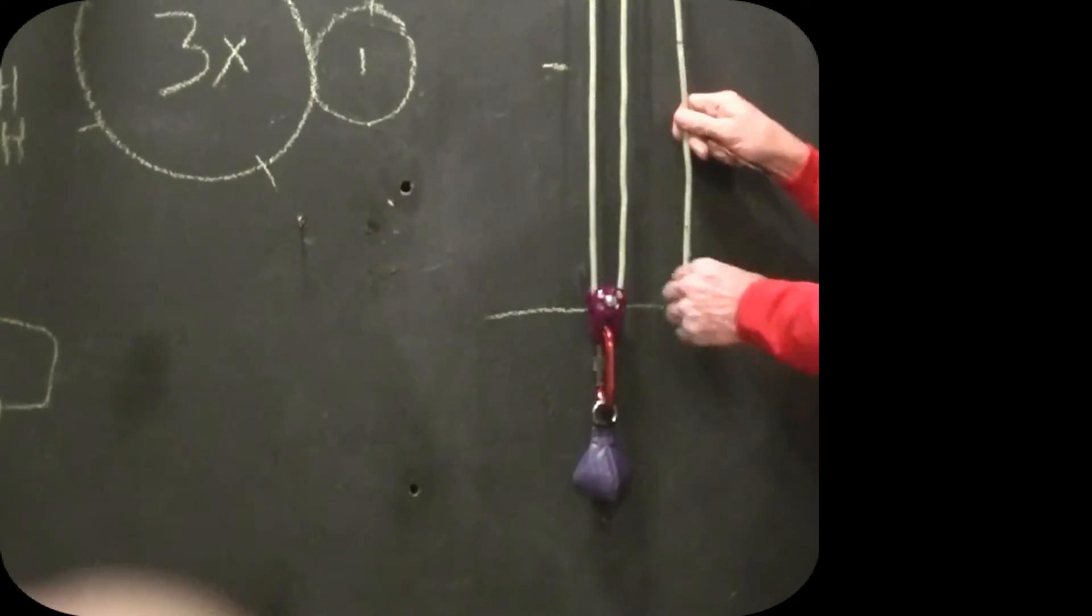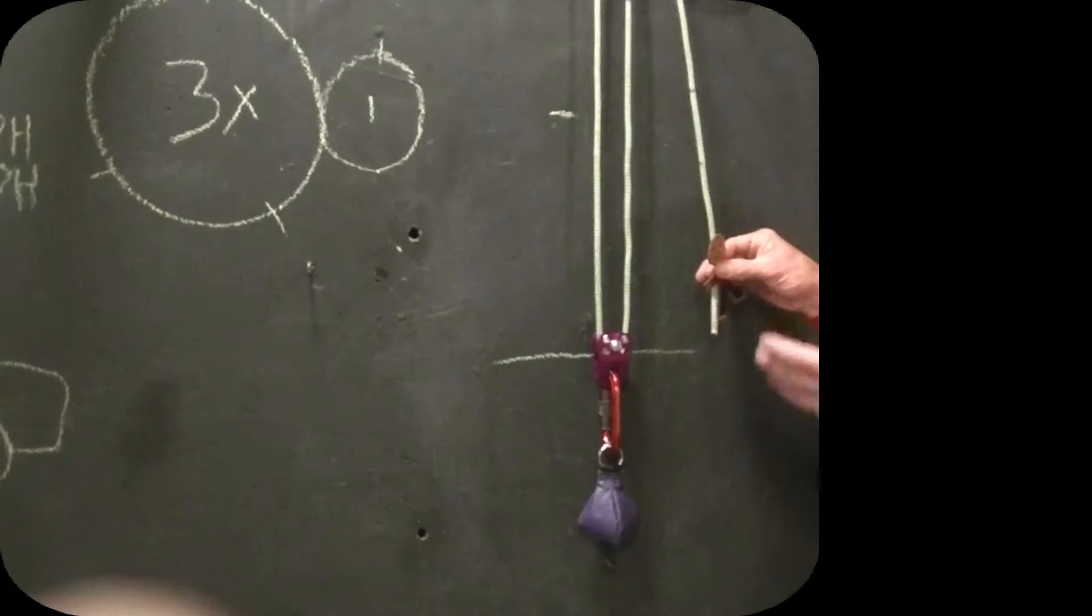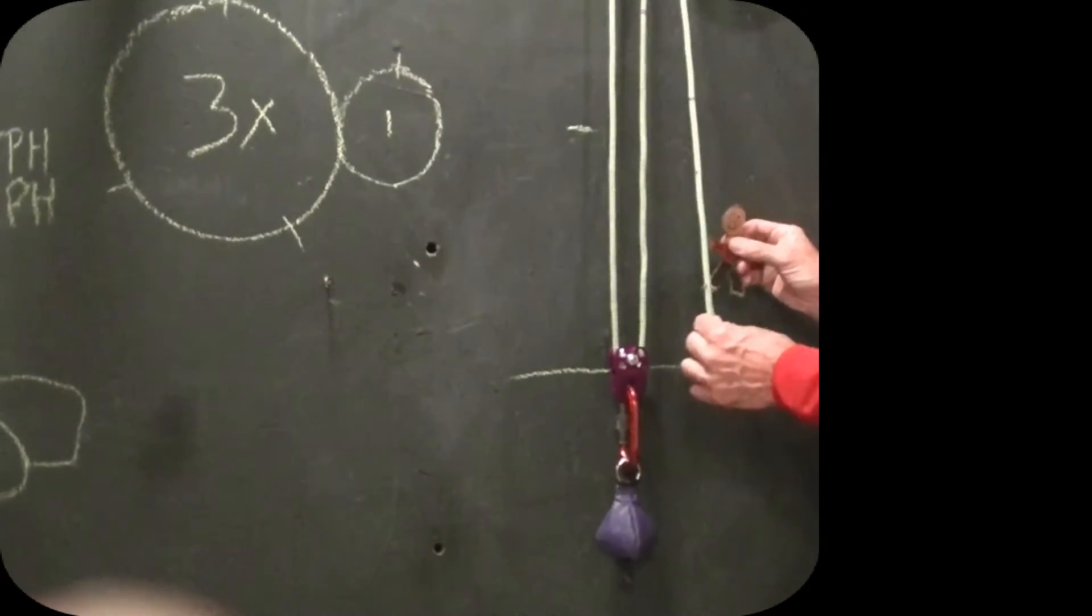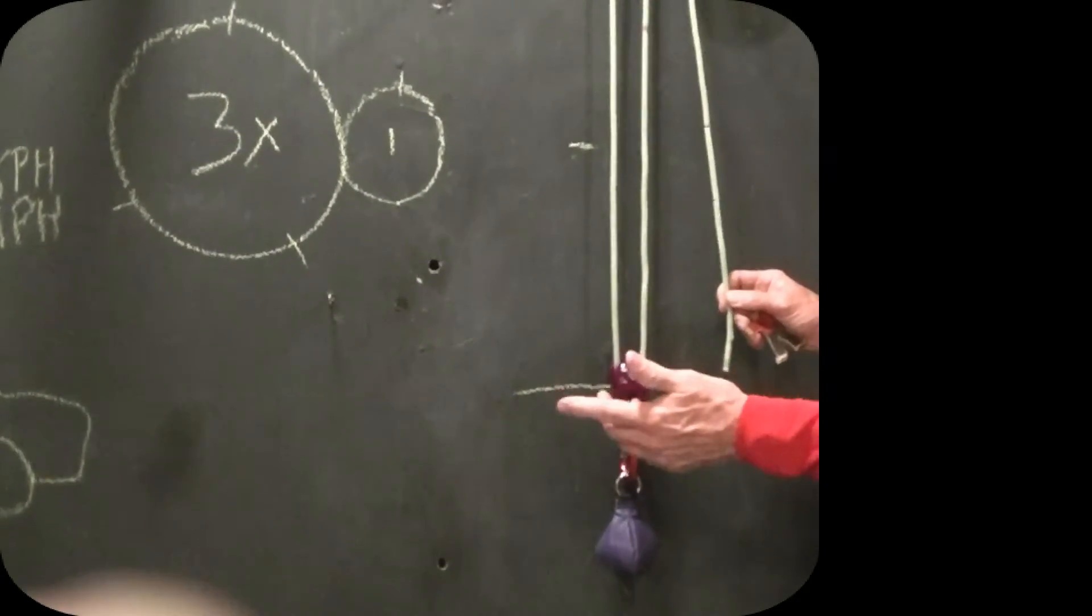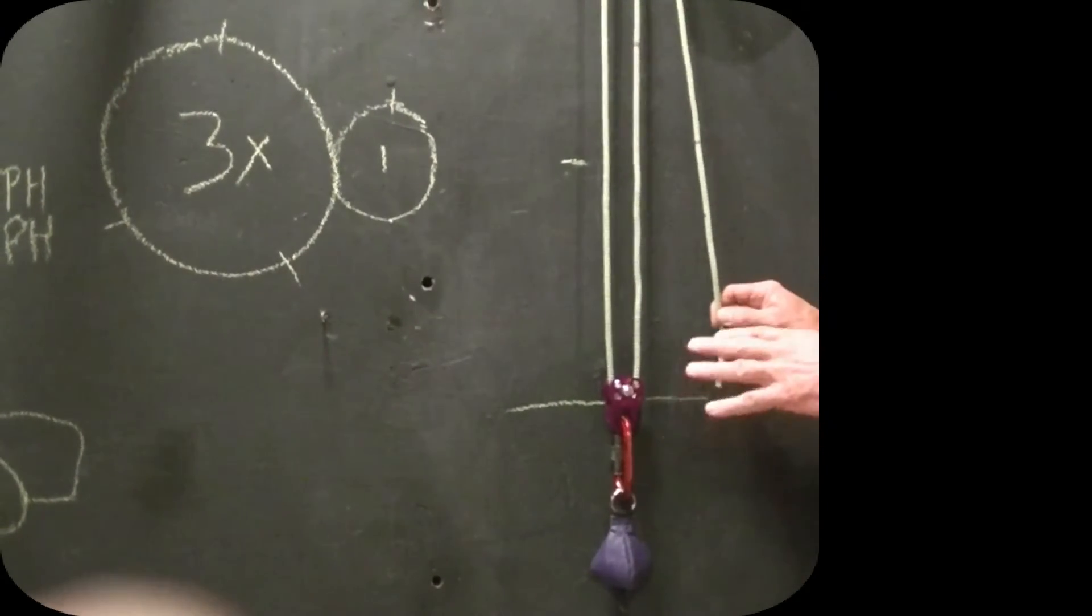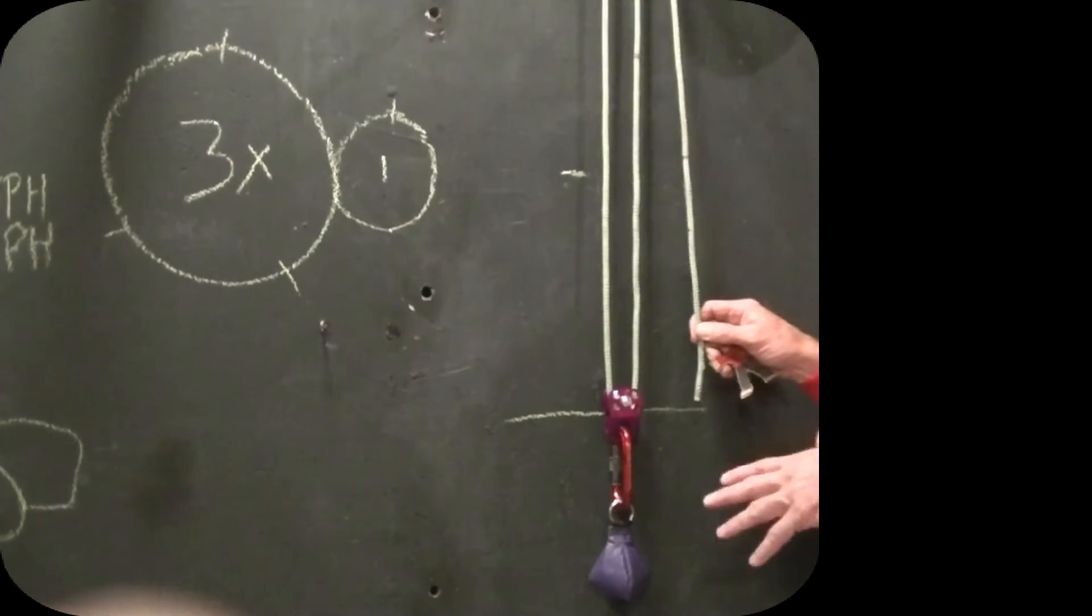Alright, so we're going to take the same concept and ask the question relative to the climber or relative to the hauler. Because just like the tire example, the question is what we're getting wrong. We're not getting the answers wrong, we're getting the question wrong.